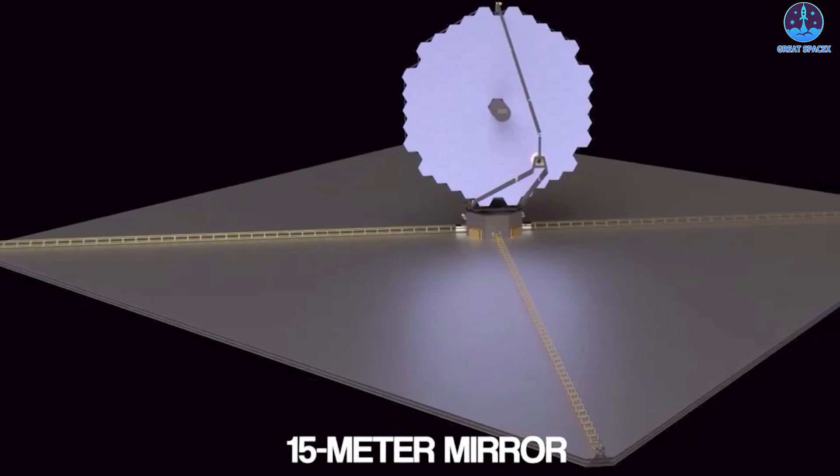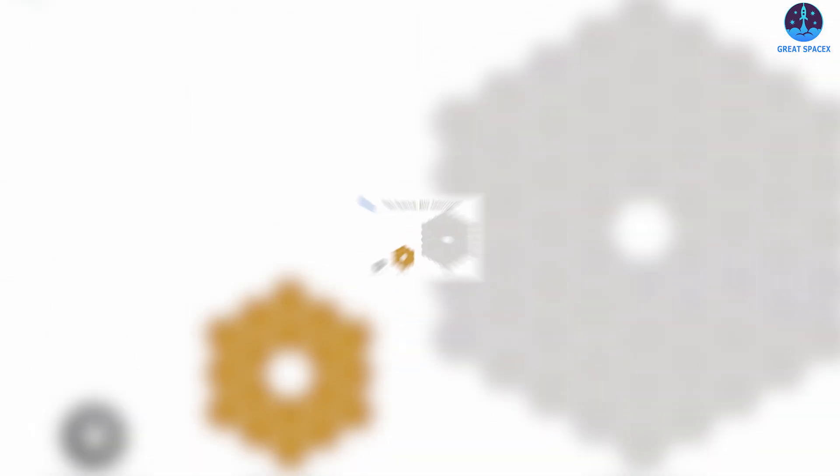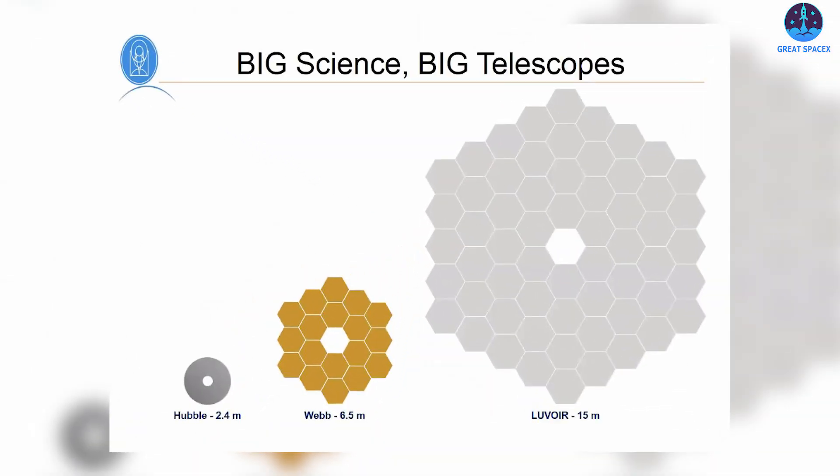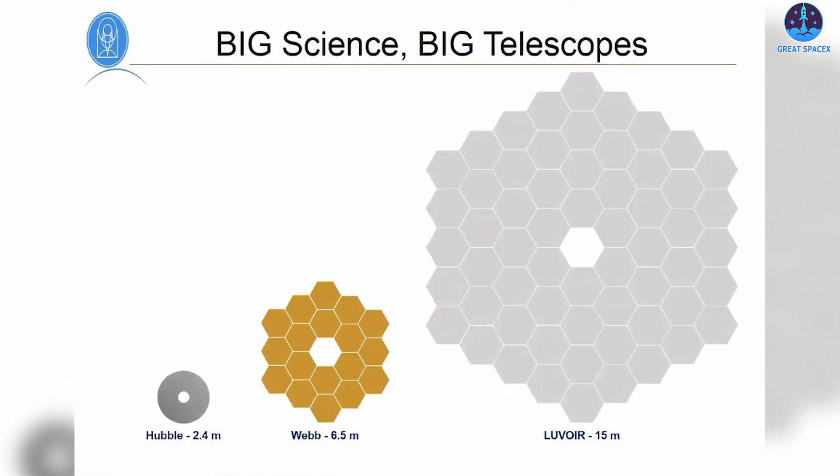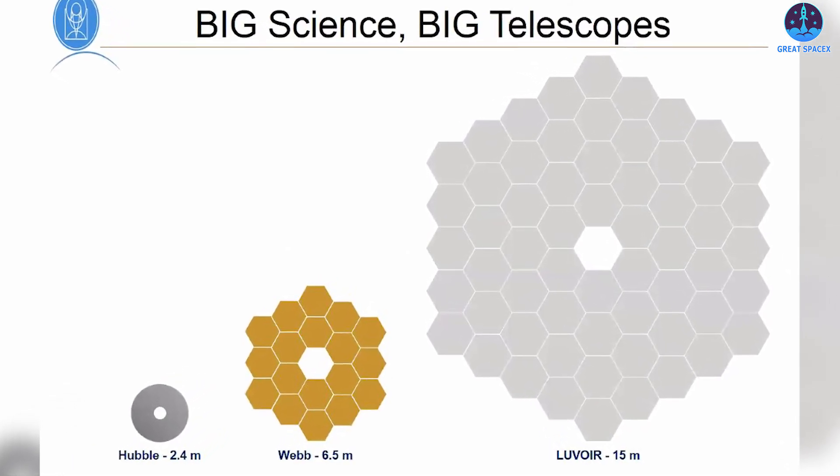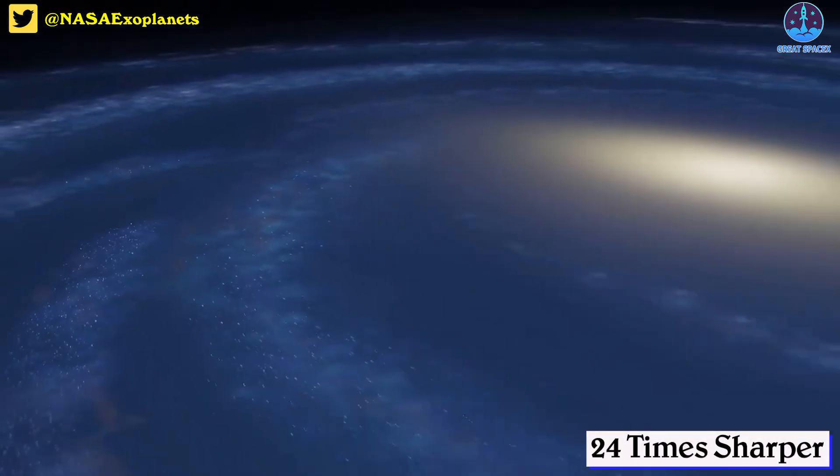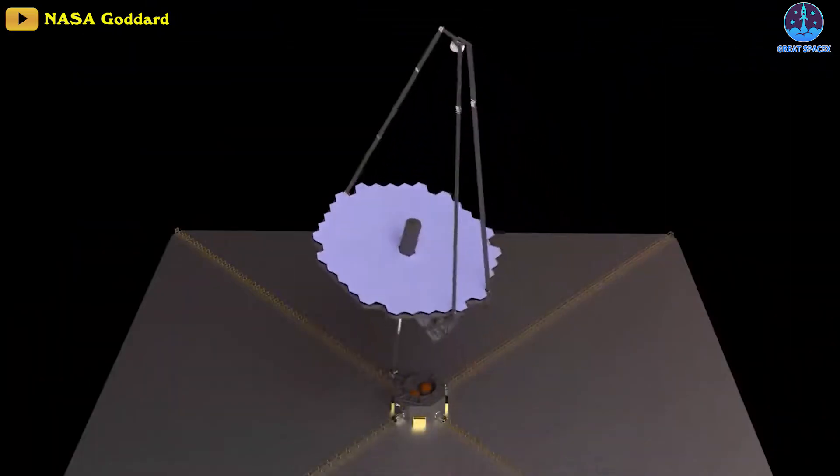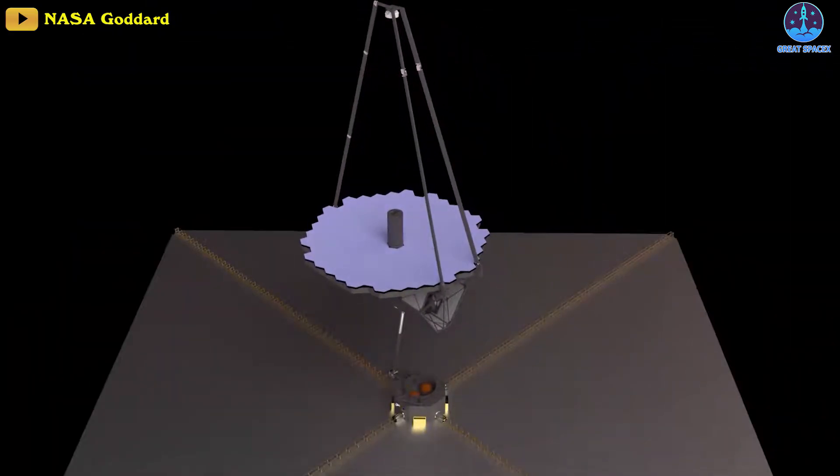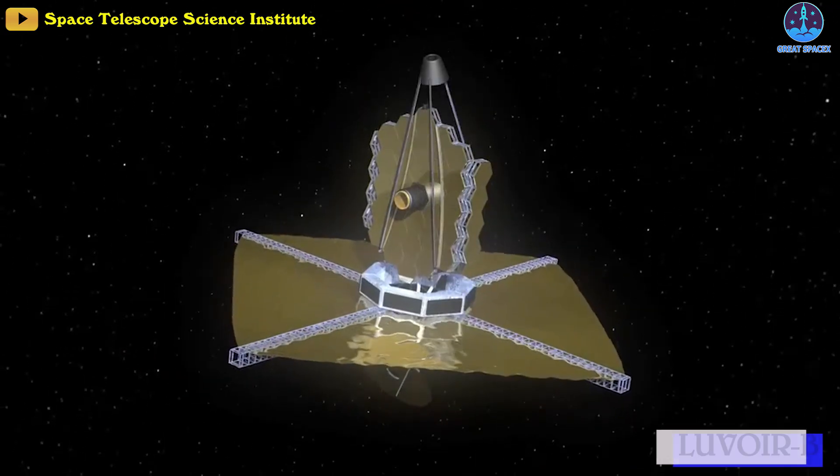LUVOIR A, previously known as the High-Definition Space Telescope or HDST, is composed of 36 mirror segments with an aperture of 15.1 meters or 50 feet in diameter. That means it is six times larger than the Hubble Space Telescope's mirror and twice the size of the 6.5 meter Webb telescope. It will also offer images up to 24 times sharper than the Hubble.